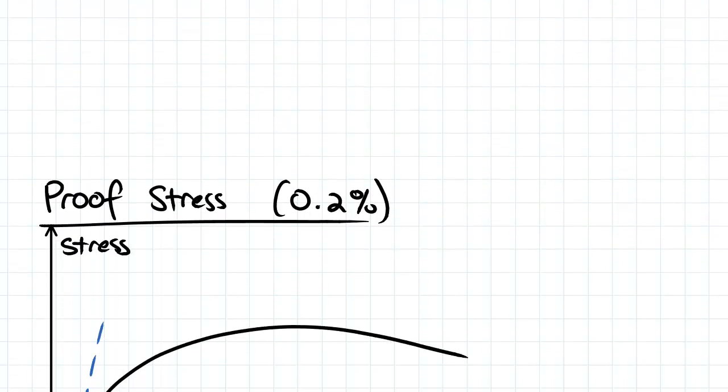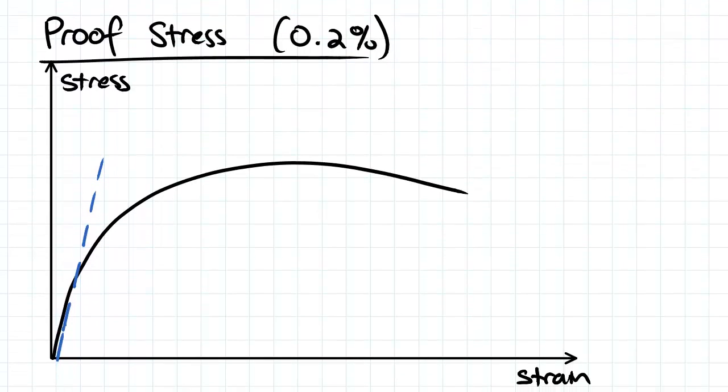So we'll first look at proof stress. The proof stress is a method of allowing us to determine the yield point and Young's modulus for an inelastic material.